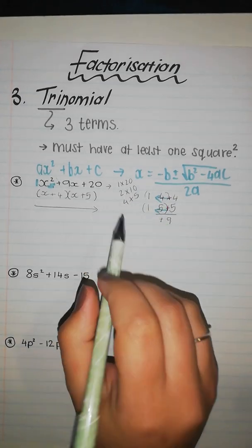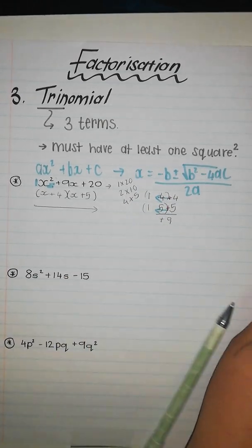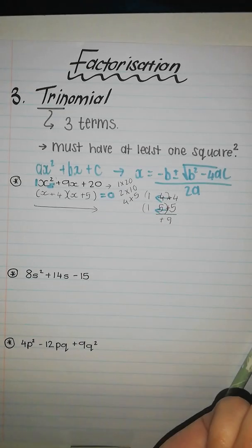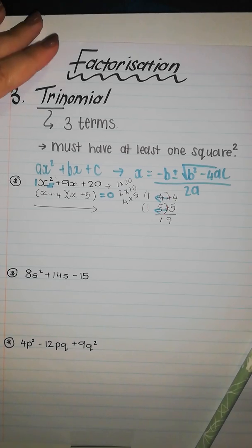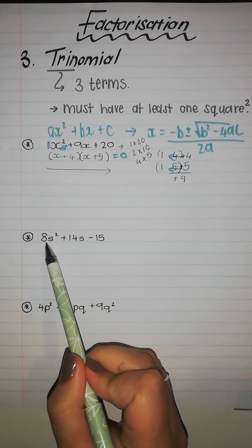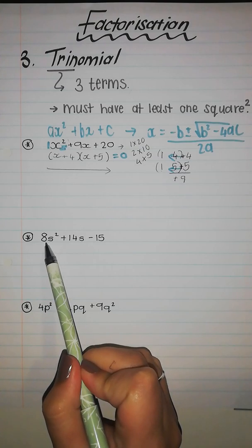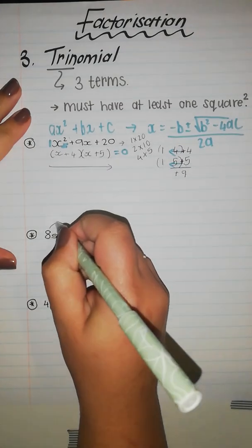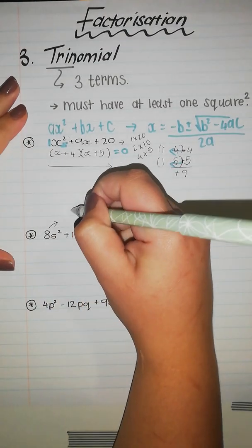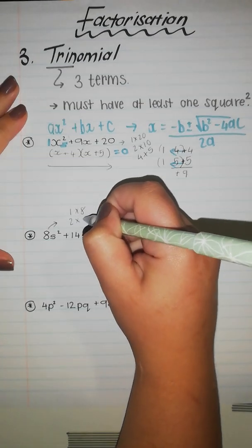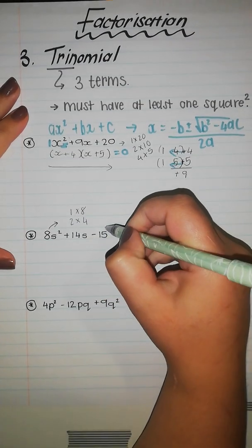Later on I'm going to ask you to solve for x and I would only be able to do that if it was equal to 0, but we did not do that now. So let's continue on to the next one. Now it gets a bit difficult where we see there's not just a 1 in front, but we're gonna take exactly the same route saying what is my factors of 8: it's going to be 1 times 8, 2 times 4.